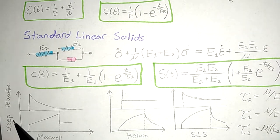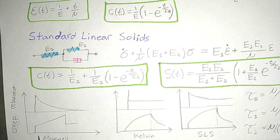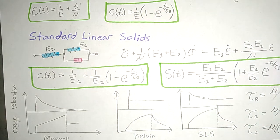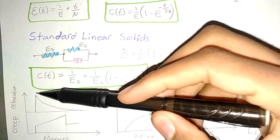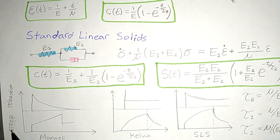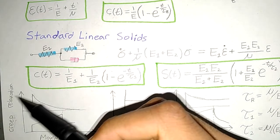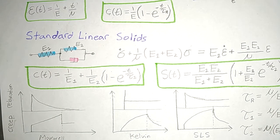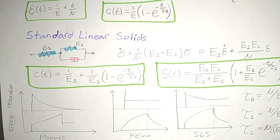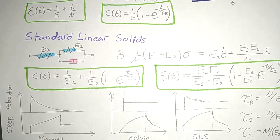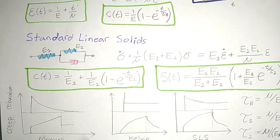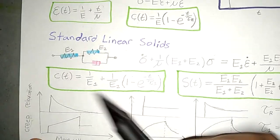We have creep and relaxation to consider. Creep is time-dependent deformation with stress held constant — we want to see what happens to strain. Relaxation means strain is held constant but stress is changing. Those two definitions explain all the graphs and results for each model.